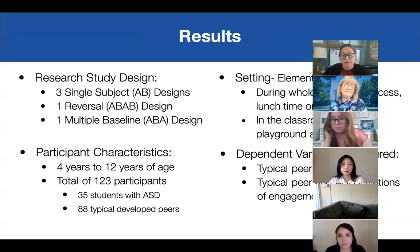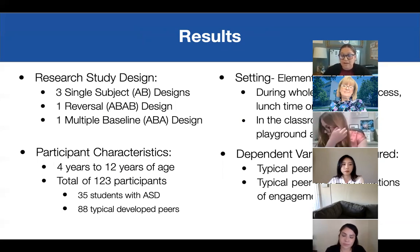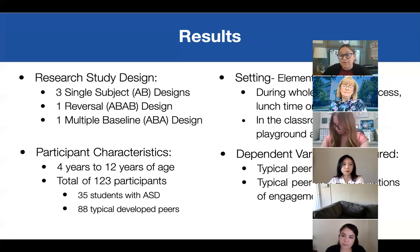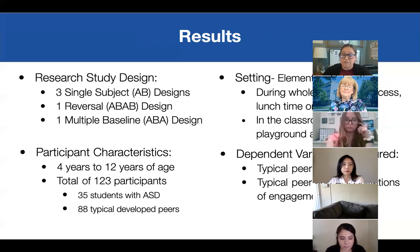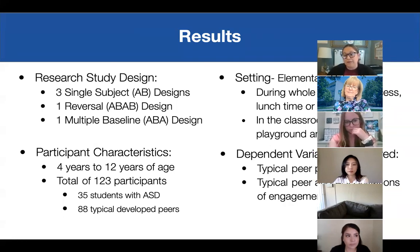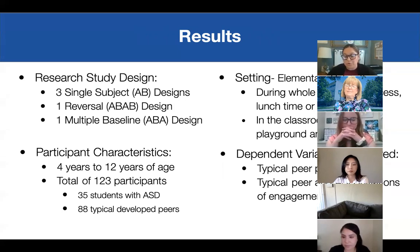Results from my study: three of the studies were single subject AB design, one was a reversal ABAB design, and one was a multiple baseline design. Students were between 4 and 12 years of age — a total of 123 participants, 35 of whom were students with autism and 88 were typically developed peers. Interventions were conducted during whole class time, recess, lunchtime, or after school, in classrooms, on the school playground, or in playrooms. Dependent variables measured were typical peer perceptions and typical peer and ASD initiations of engagement.